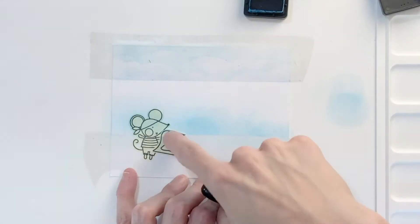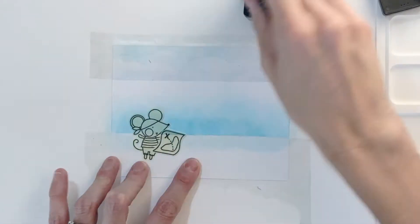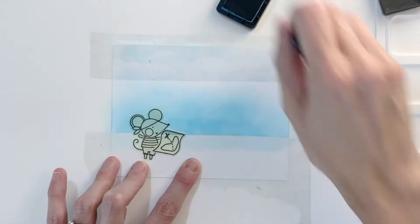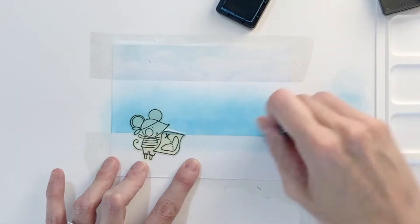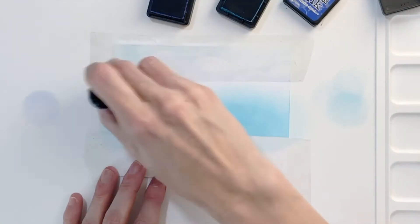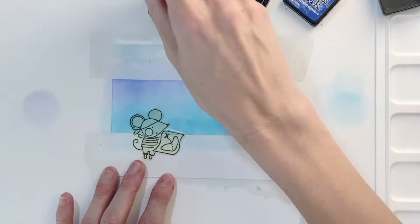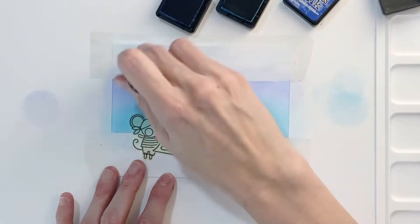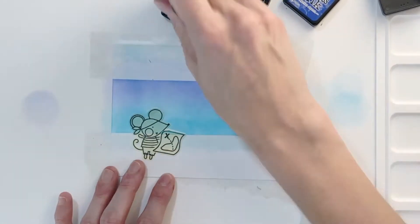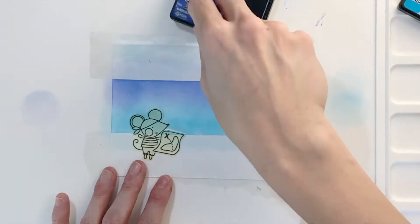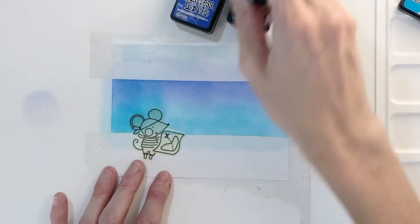Now I'm going to ink blend my sea. I'm starting with Mermaid Lagoon and just ink blending the bottom portion of my sea, kind of where the ocean would meet the beach. Then my upper portion closer to the sky, making it a little bit darker, so I am using Blueprint Sketch here, just blending that top portion.